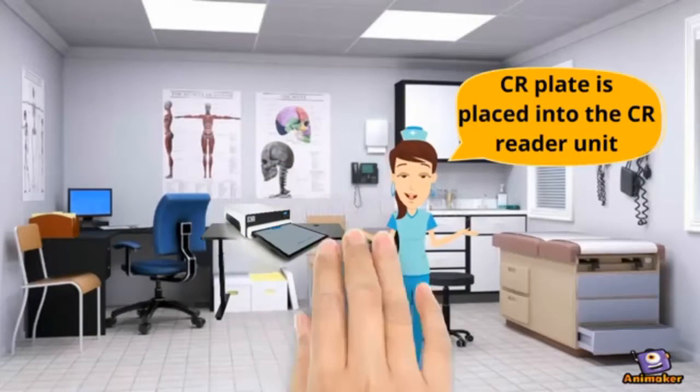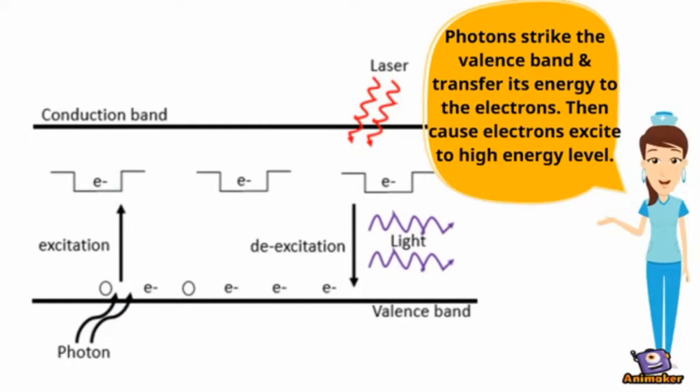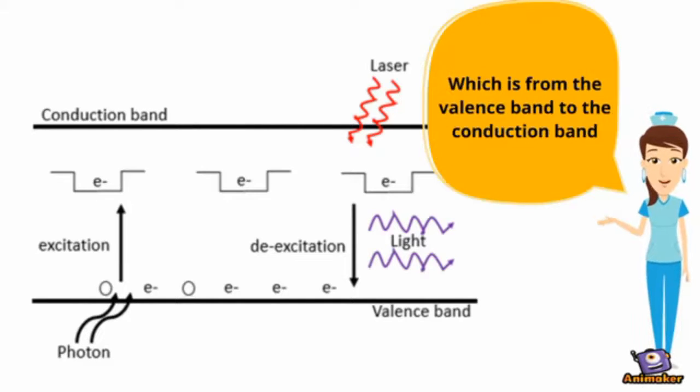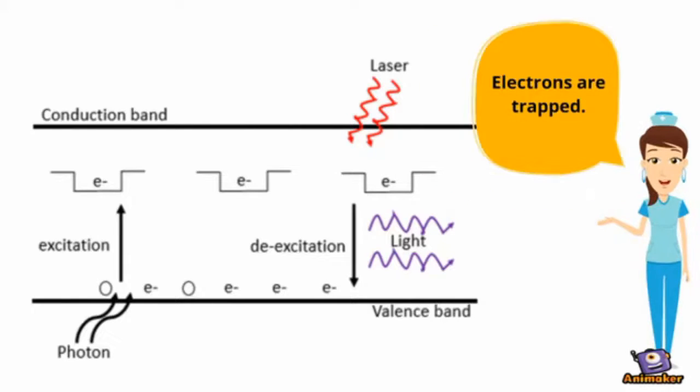During the exposure to the imaging plate, photons strike the valence band and transfer energy to the electron. This causes the electron to excite to a high energy level from the valence band to the conduction band and eventually some of the electrons are trapped in the epicenter.